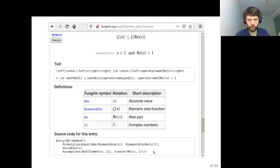At the bottom you see the source code. This is what is actually in the database. It's a symbolic expression describing the formula and metadata. The database itself is just a list of symbolic expressions like this. The website is generated automatically from this source code, including the TeX code, which is generated automatically.